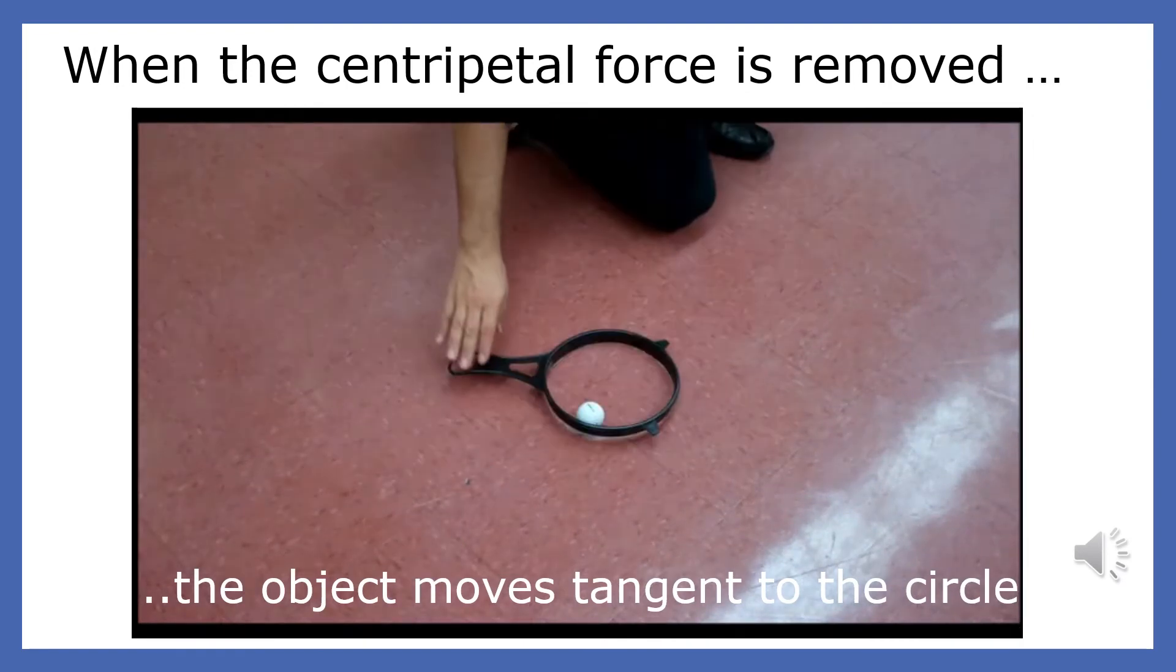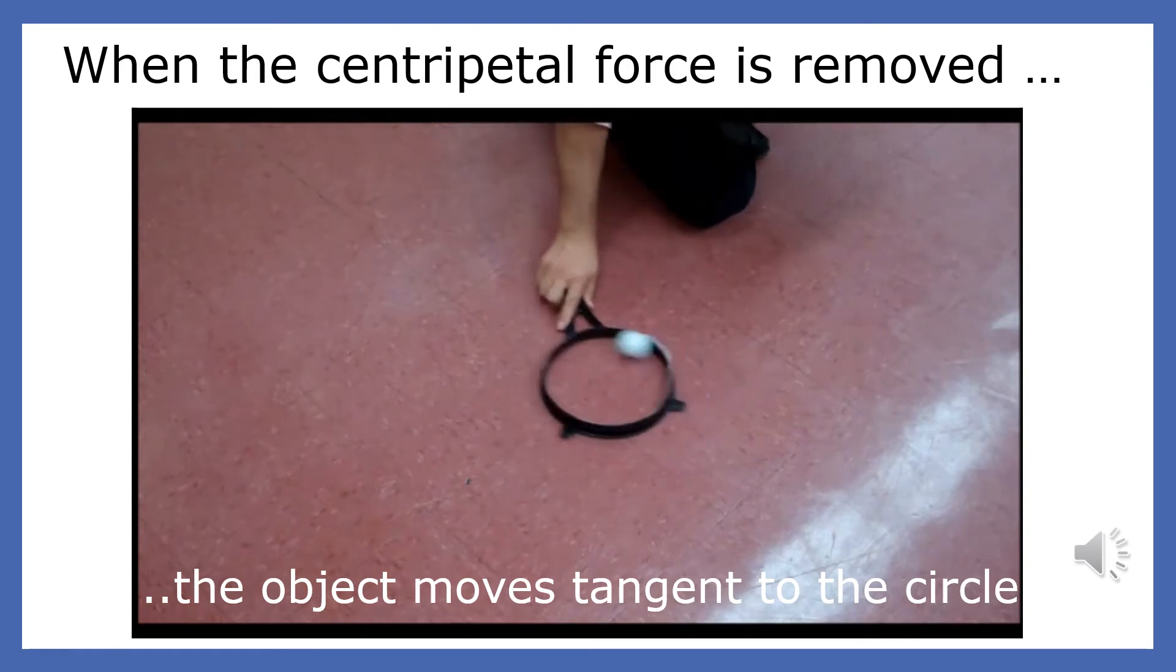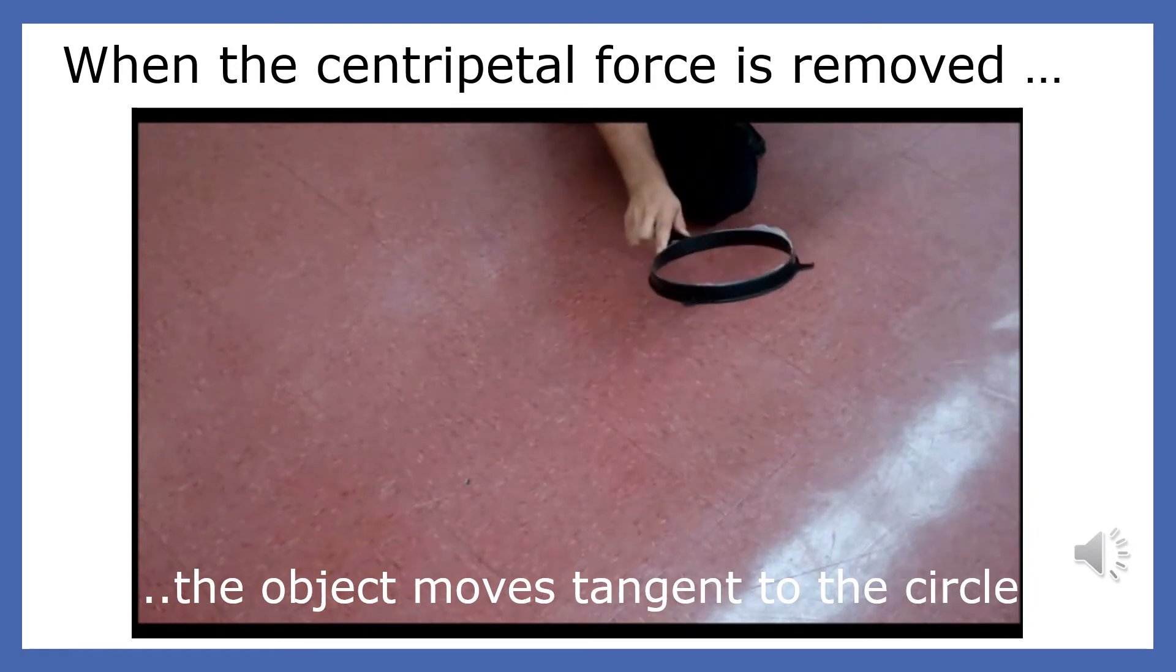When the centripetal force on an object is removed, the object moves in a straight line tangent to the circle.